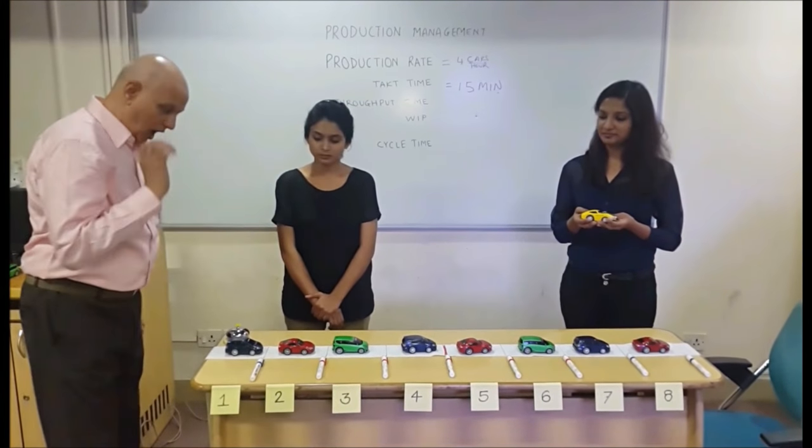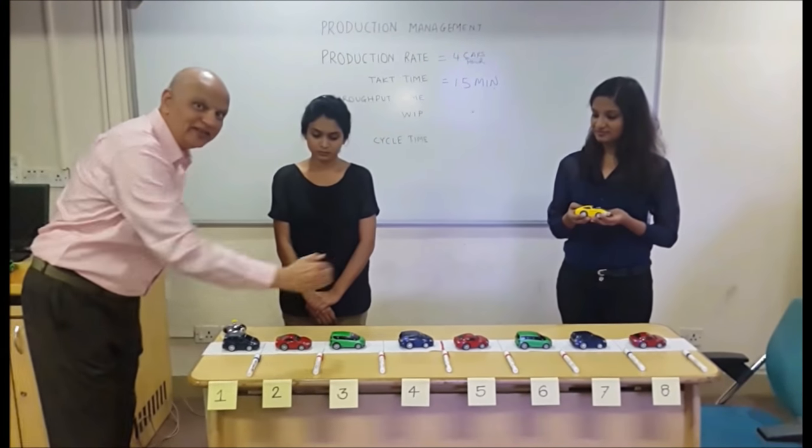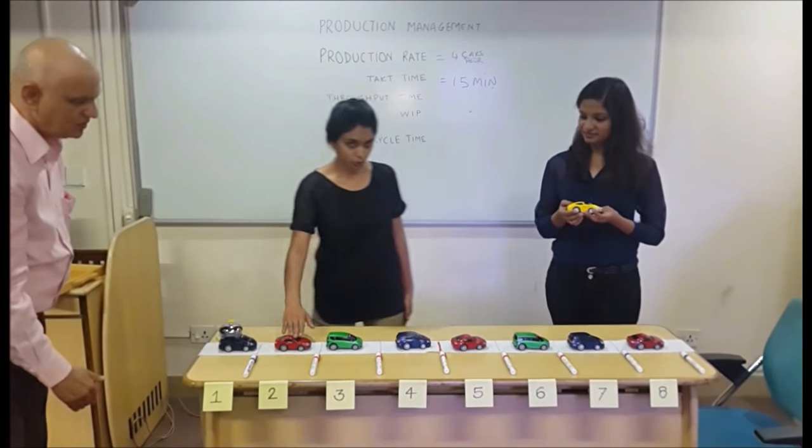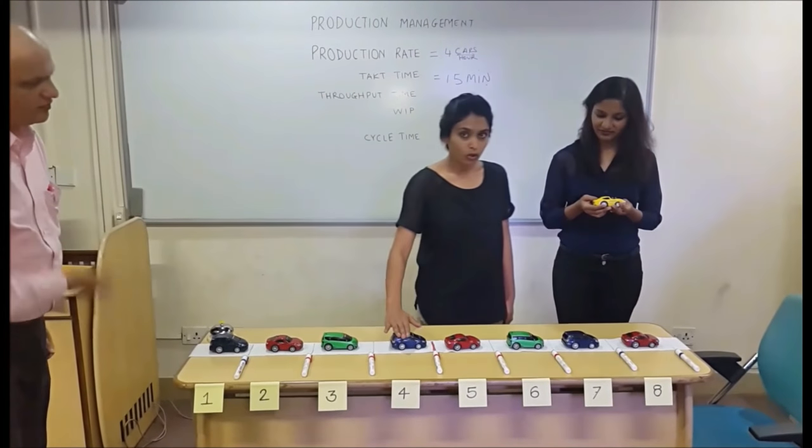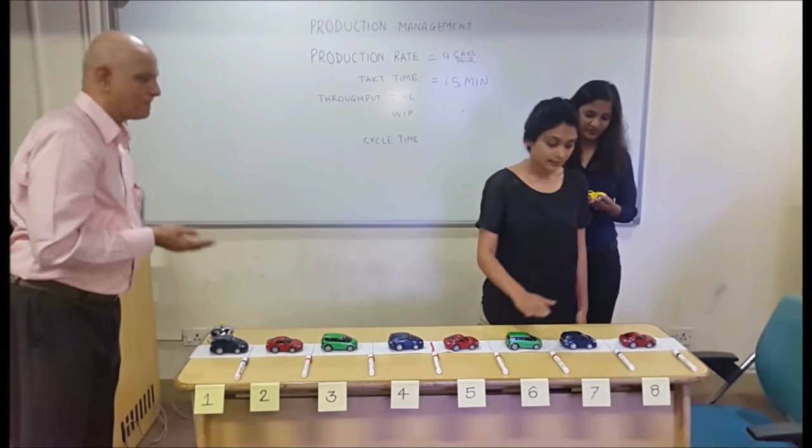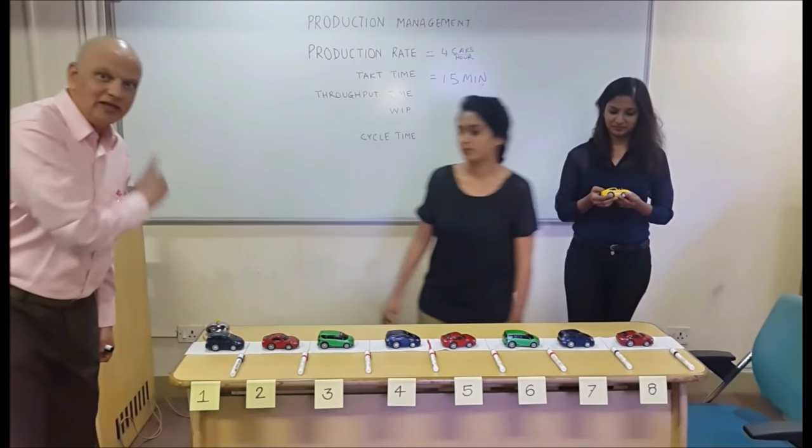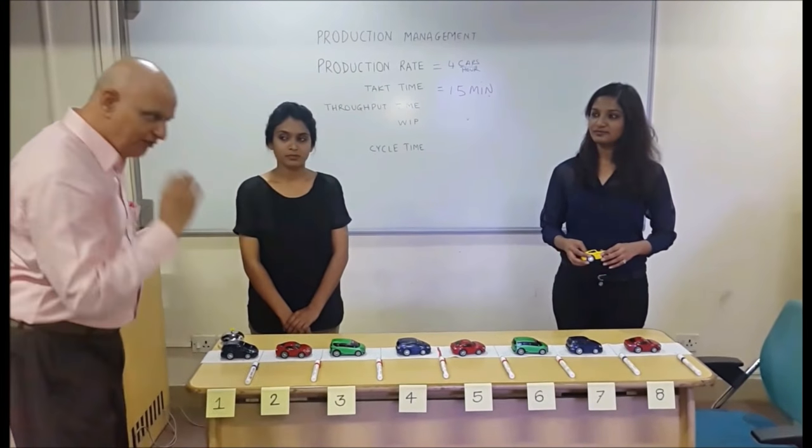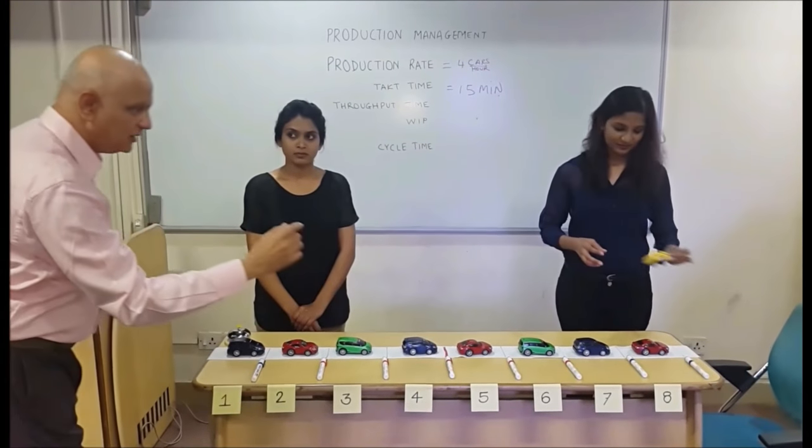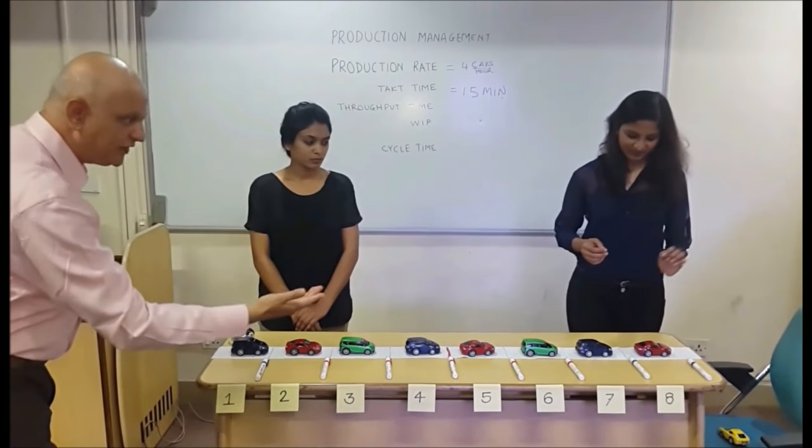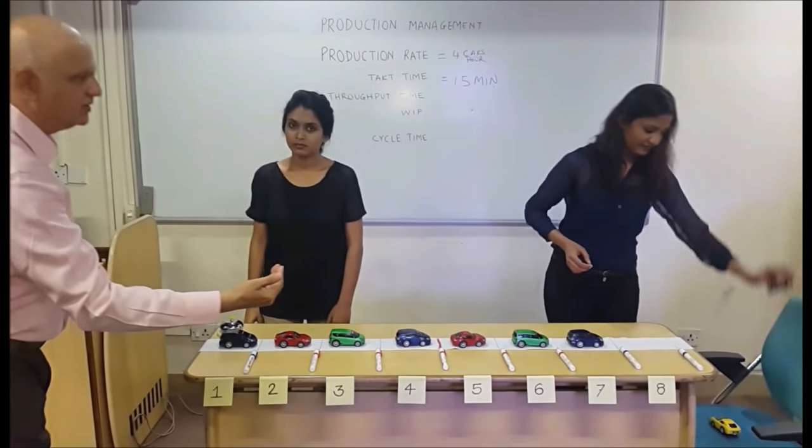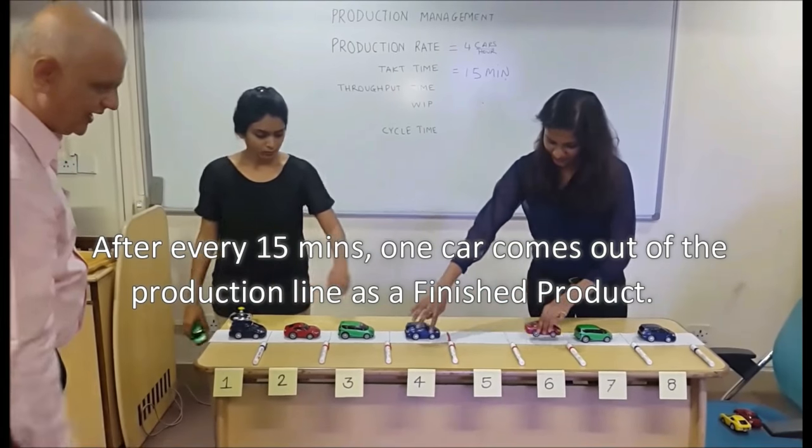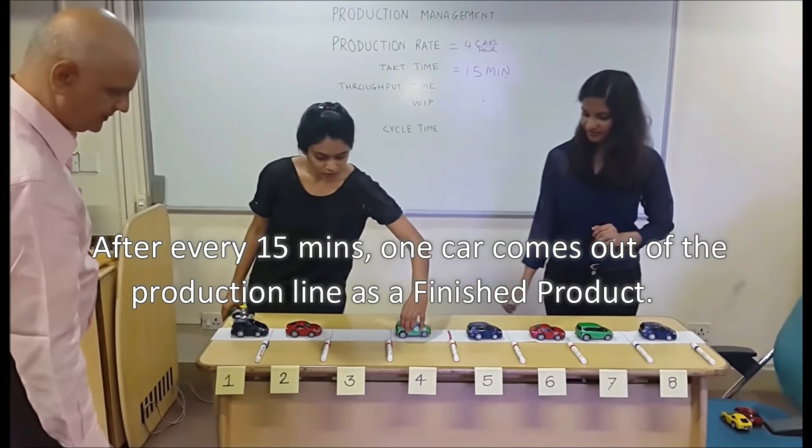Perfect. So given the throughput time of two hours and a takt time of 15 minutes, how many cars are there in the system? Would you please count? One, two, three, four, five, six, seven, and eight. So eight cars are there in the system. If production continues, what will happen? One more 15 minutes is over, so another car goes out of the system and all the cars move ahead by one operation.